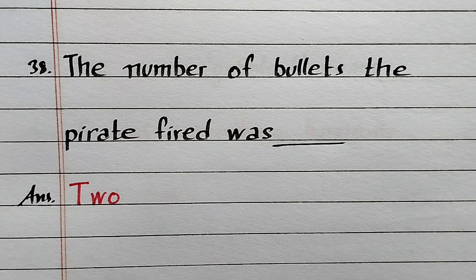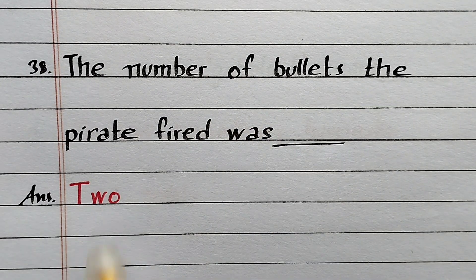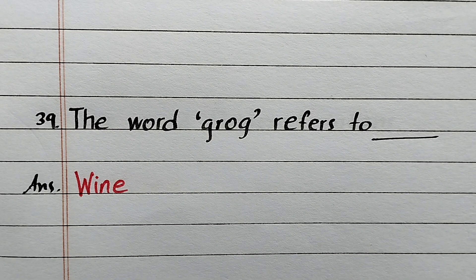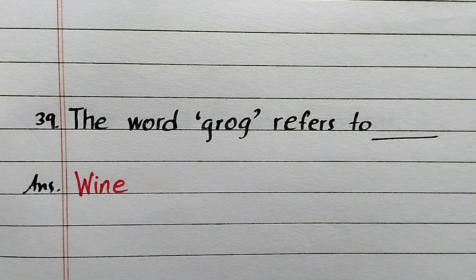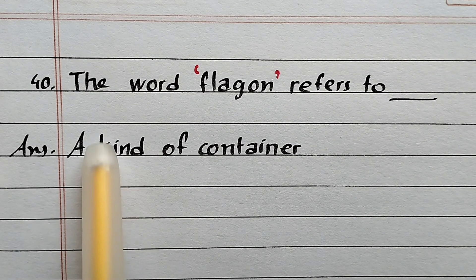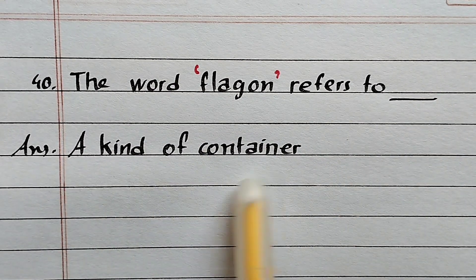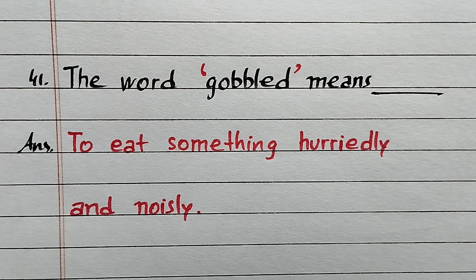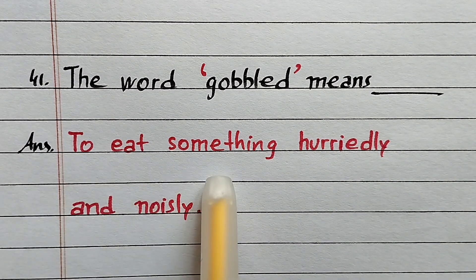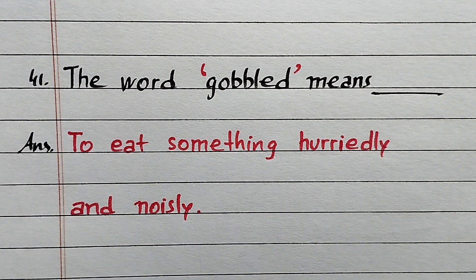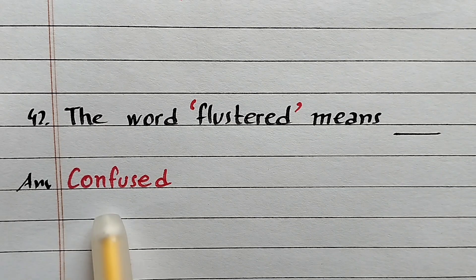Question number 38: The number of bullets the pirate fired was ___? Answer: 2. Question number 39: The word 'grog' refers to ___? Answer: Wine. Question number 40: The word 'flagon' refers to ___? Answer: A kind of container. Question number 41: The word 'gobbled' means ___? Answer: To eat something hurriedly and noisily. Question number 42: The word 'flustered' means ___? Answer: Confused.